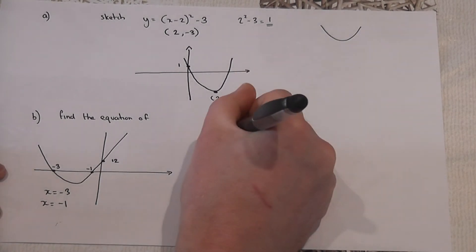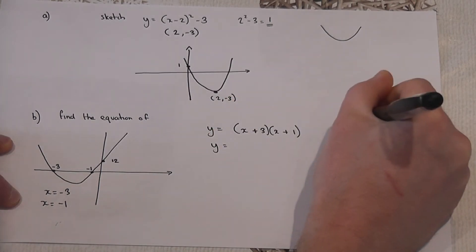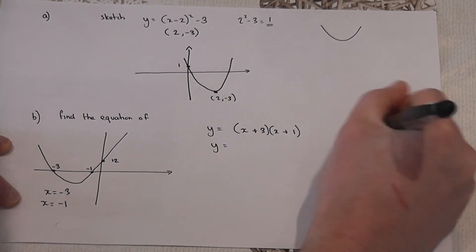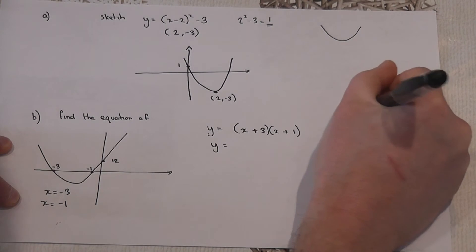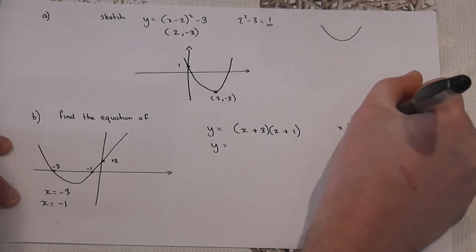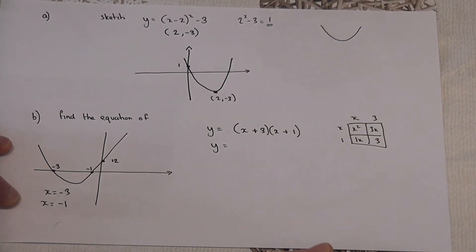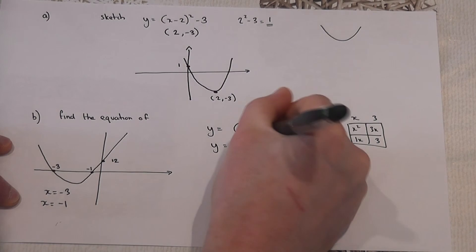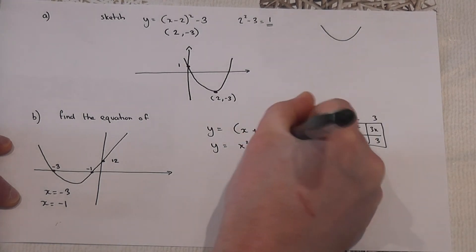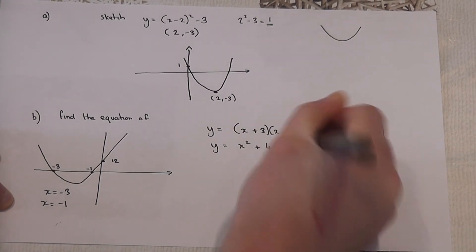If I expand this out, I get the following. This is one more thing to be aware of before we finish the question. x squared, 3x, 1x and 3. So x² + 4x + 3.